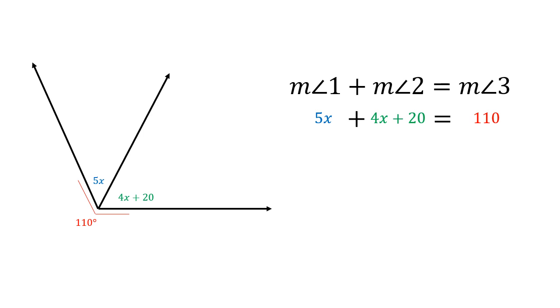Now we have an equation we can solve using our skills. Combine the x's on the same side of the equation, any like terms we can combine. By doing so, we've simplified that equation to 9x plus 20 equals 110. Now we can start moving things to the other side by subtracting 20 first and then dividing by 9 to figure out that x equals 10.